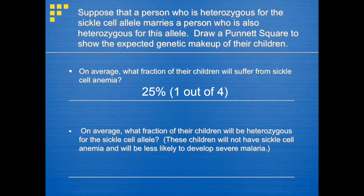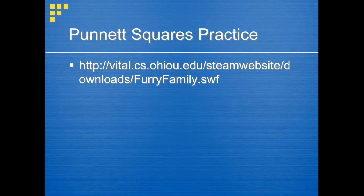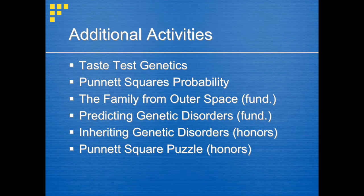By the same logic, 2 out of 4 predicted genotypes are heterozygous for the sickle cell allele. Therefore, 50%, or 1 out of every 2 children, will not develop sickle cell anemia but will be less likely to develop malaria. For more practice with Punnett squares, genotypes, and phenotypes, visit the website shown. You can also complete additional activities included as part of the lesson plan resources.